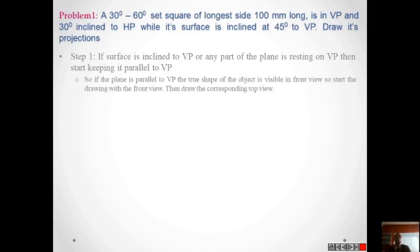Now we have to see what is the surface inclination. The longest side which is in VP is at an angle of 30 degrees to HP, while the surface is inclined at 45 degrees to VP. So the surface is inclined to VP. The first thing we have to do is keep it parallel to VP — that is the first step if the surface is inclined to VP or the object is resting on VP.